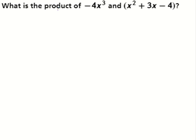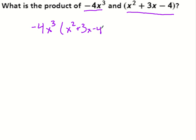So, products — multiplying. We're finding the product of a monomial and a trinomial. We're multiplying a monomial by a trinomial, and this is just like distributive property. So if I have negative 4x to the third power times x squared plus 3x minus 4, this is just distributing that negative 4x to the third to every single term inside the parentheses. If there are five terms, I would distribute to all five.